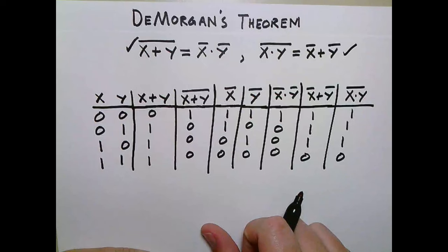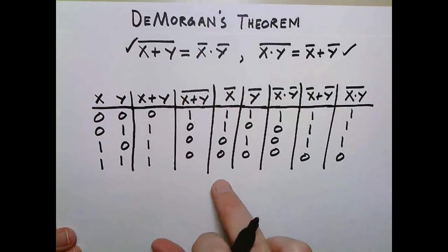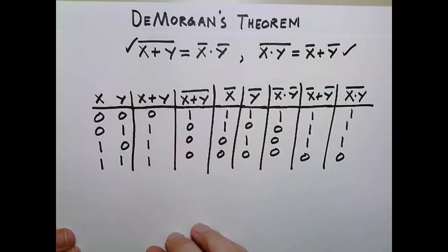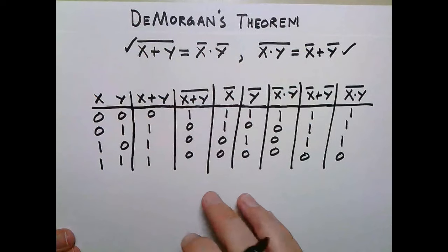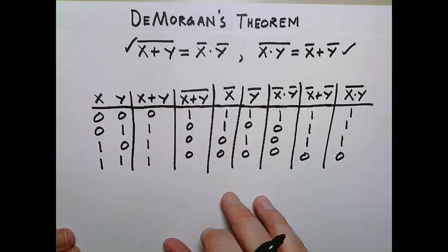So like I said, I just wanted to show you guys that one. It's really useful, especially when we start doing stuff like taking the complement of a function, and there's some circuit optimization techniques that rely on De Morgan's theorem, so I wanted to take a special look at that. Hopefully that made sense. If not, leave your questions in the comments below, and I'll see you guys in the next lesson.